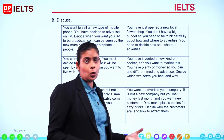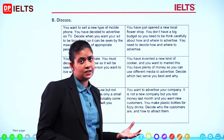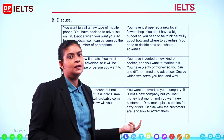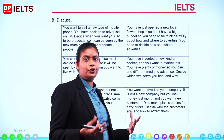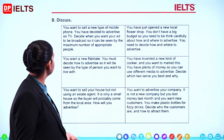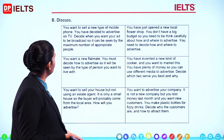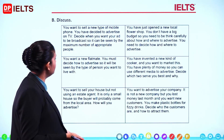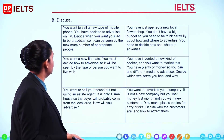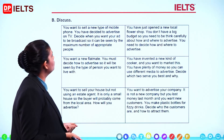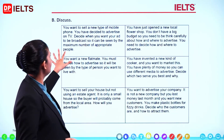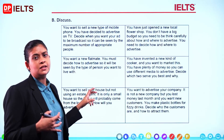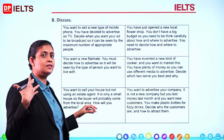Discuss these topics — you could also think about a writing activity from these cards. Think about bringing out your opinion and working on your answer. You want to sell a new type of mobile phone and you have decided to advertise on TV. Decide when you want your ad to broadcast so it can be seen by the maximum number of people. This is important for your IELTS General Writing Task 1.